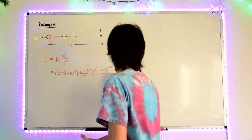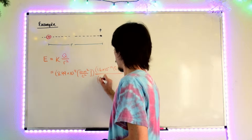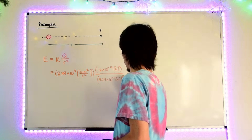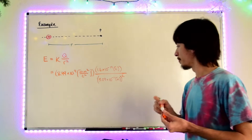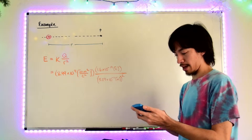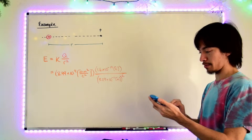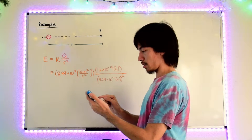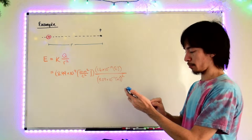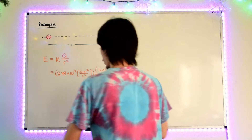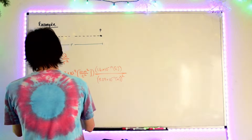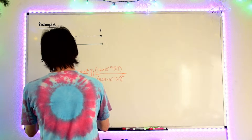Divided by the distance, which is 5.29 times 10 to the minus 11th meters. Don't forget the most common mistake, which is to square it. So we do 5.29 times 10 to the minus 11th, square it — it's in the bottom. Multiply across: coulombs constant times the charge of our proton. So we get that the electric field is 5.14 times 10 to the 11th.